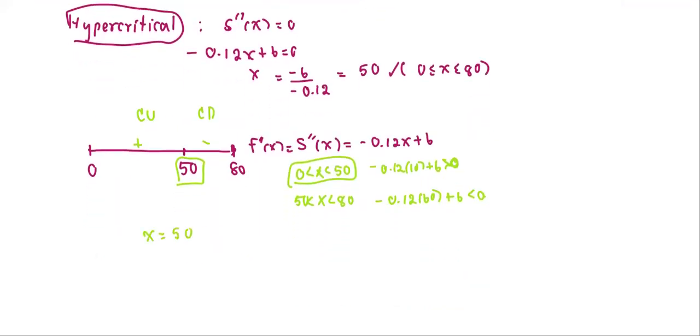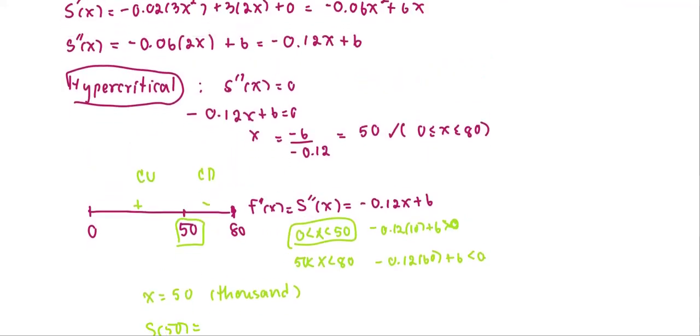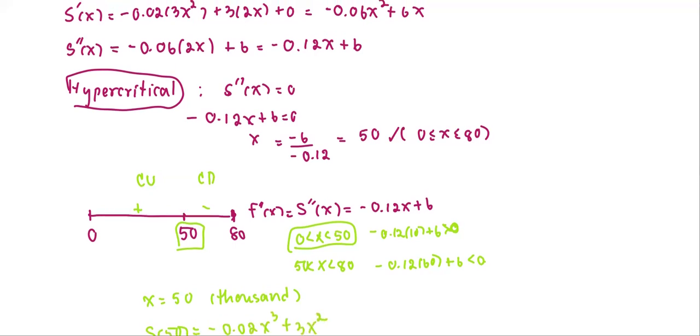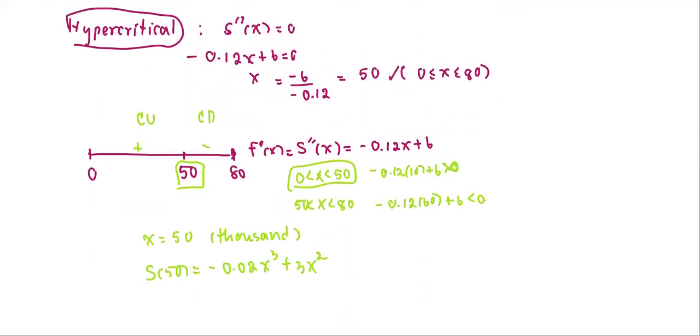If we say x = 50, the unit is in thousands. And what is the sales? The sales at 50, the sales function is S(x) = -0.02x³ + 3x² + 100.